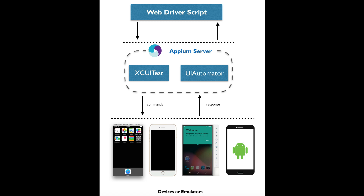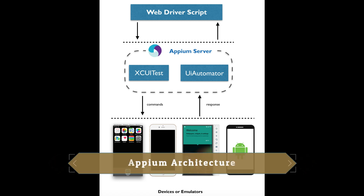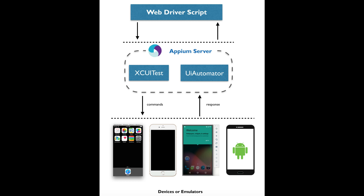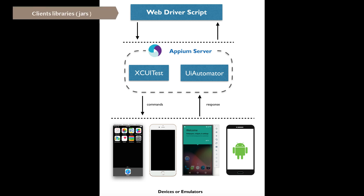Here we have the Appium architecture screenshot, which I found from Google. At the top you can see WebDriver Script — that is the Appium client libraries which you use at the time of coding for iOS or Android Appium scripts. You download the JAR from the web. These are called client libraries and they contain methods — for example, if you are dealing with touch events you will use click operations or sendKeys operations. Such things are under the client libraries.